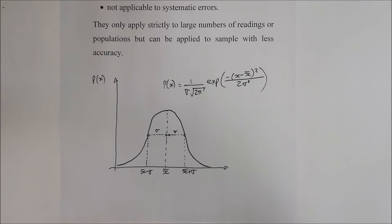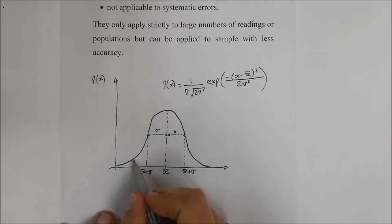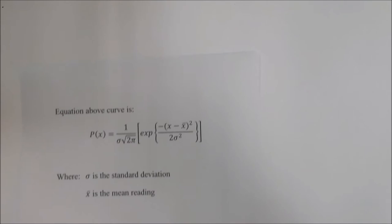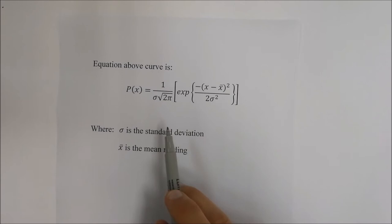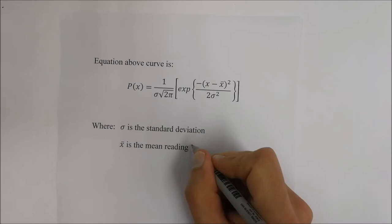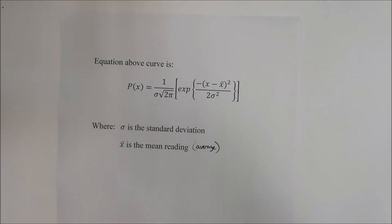You can also get 2 times the standard deviation, which covers more area toward the tails, but we won't go into that in too much detail. In the equation, sigma (σ) represents the standard deviation and x̄ — x with a bar on top — is the mean reading, which can also be considered the average.